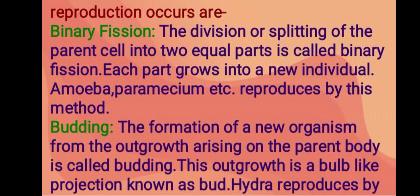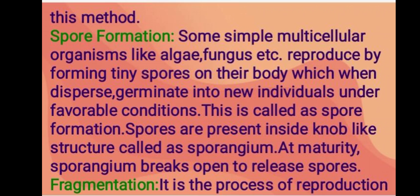Budding: the formation of a new organism from an outgrowth arising on the parent body is called budding. This outgrowth is a bulb-like projection known as a bud. Hydra reproduces by this method. Spore formation: some simple multicellular organisms like algae and fungi reproduce by forming tiny spores on their body which, when dispersed, germinate into new individuals under favorable conditions.